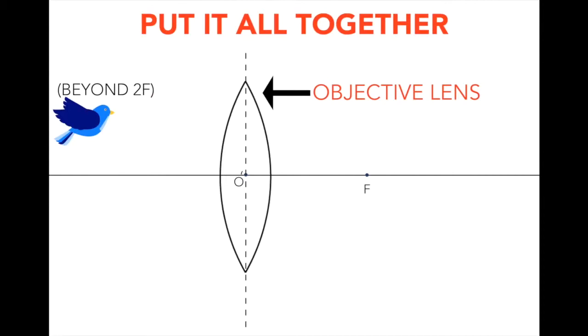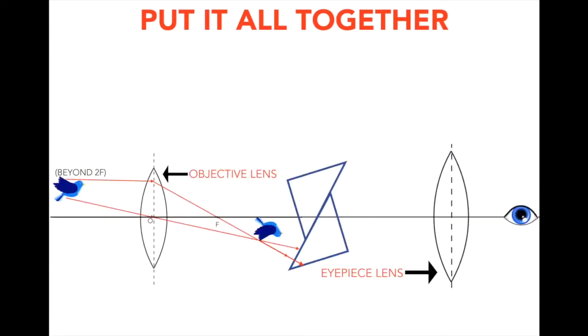So starting with the objective lens that's converging, it does its usual job by converging the light rays in order to form a real image. From the real image, they hit the porro prism and make a 180 degree turn per prism. This flips the image to make it upright, as you can see the top arrow is at the bottom, and the bottom arrow is now at the top.